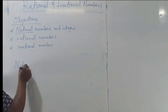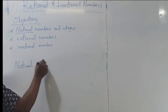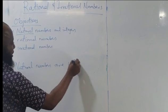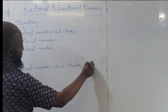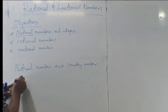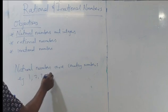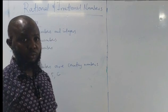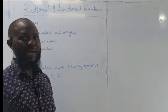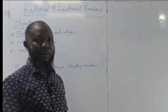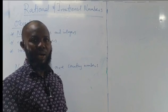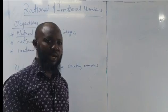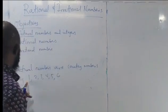Natural numbers are counting numbers. The actual counting numbers are, for example, 1, 2, 3, 4, 5, 6, and so on. Zero is not a natural number because we cannot use zero to count. Zero is a digit that we can put at the end or in the middle of digits to form a number, to form a natural number, but standing on its own it is not a natural number.